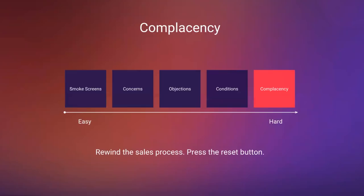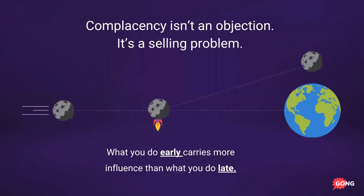The final type of objection — at the furthest end of the hard spectrum — is complacency. This is not an objection; it's a selling problem. This is when your buyer is just not sold on the idea of buying your solution, buying it now, or buying it from you. It needs to be addressed early in the sales process through qualification or urgency-building techniques. If your buyer feels complacent, objection handling is not the solution — you need to rewind the sales process, press reset, and figure out how to build urgency or gracefully bow out of the deal.